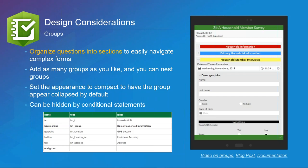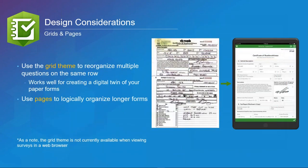Now we're moving into some design considerations. Groups allow you to combine like questions within your form. You can customize them with HTML codes to modify font size, background color, and more. You can also hide specific groups to be completed only when relevant questions are answered for a more streamlined survey. As a best practice, I like to bold begin and end group statements to help visualize the survey in an organized fashion, and italicize begin and end repeat spaces.